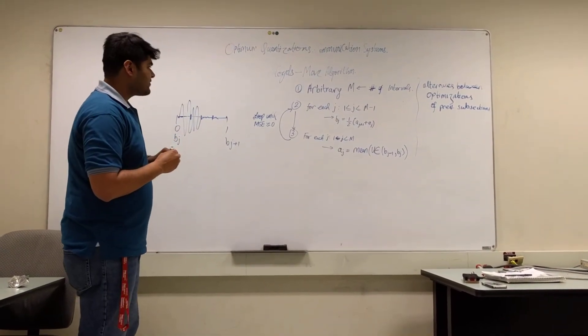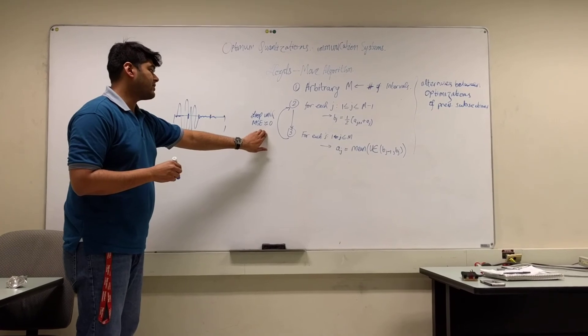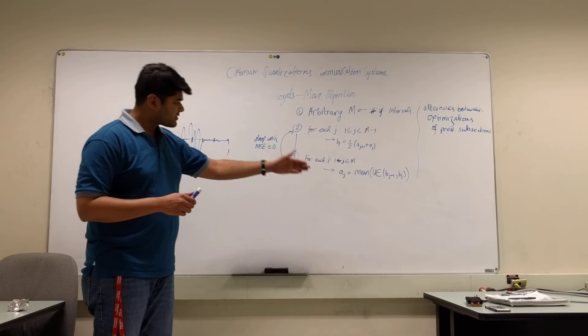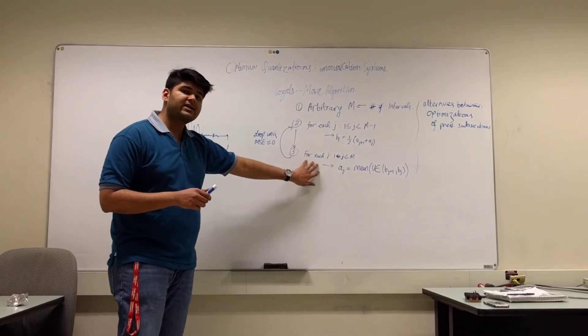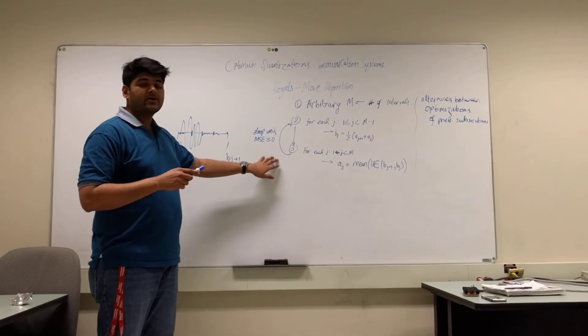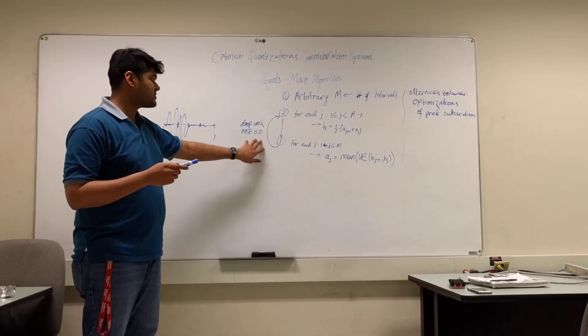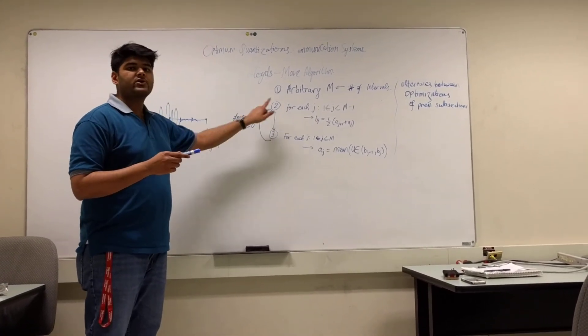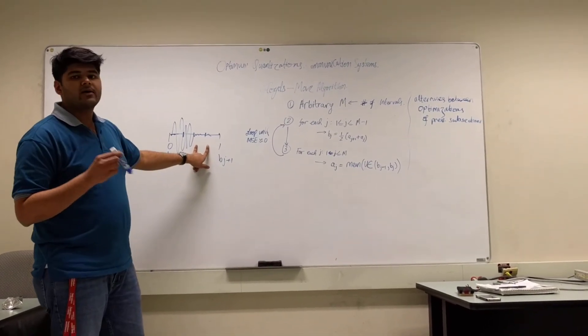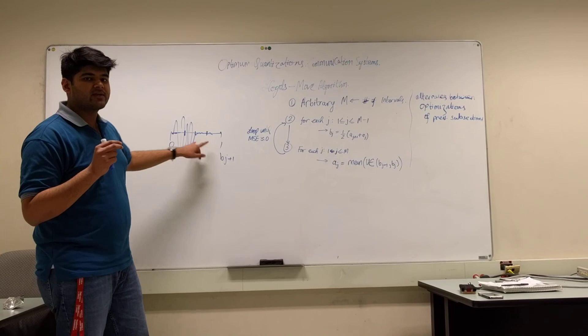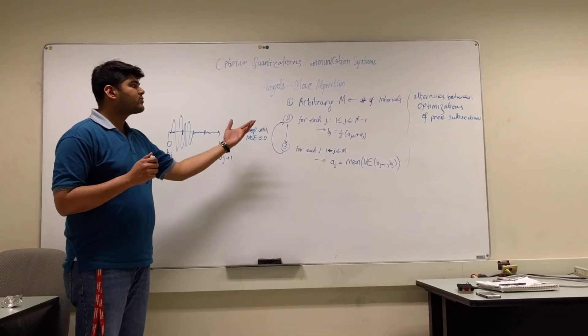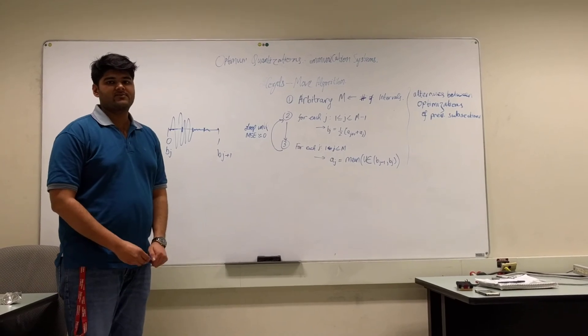So essentially we are keeping track of the mean squared error, and we want to minimize it as much as possible. Hence we move on to the third step where we are calculating the mean squared error. And until the point it is negligible or as close to zero, we keep looping over and over again until we get the most optimum point within an interval. And that's how the Lloyd's-Max algorithm works. Thank you.